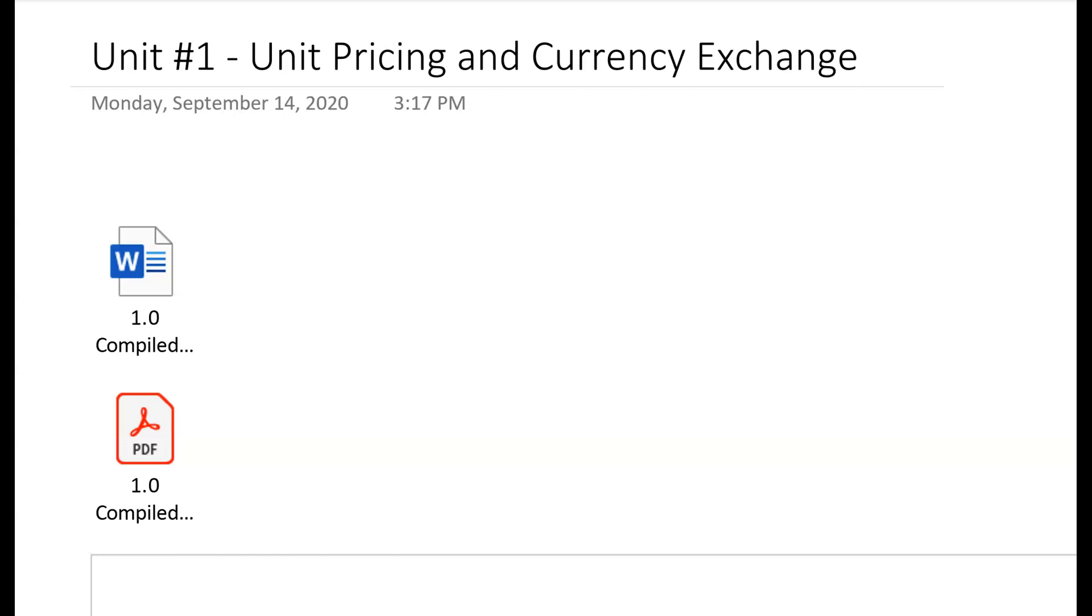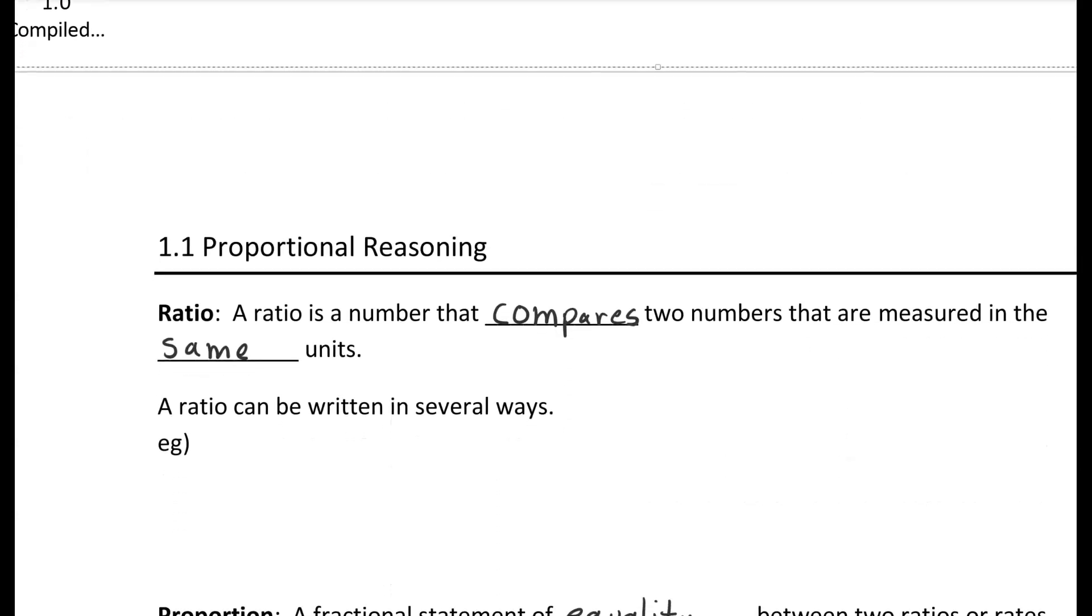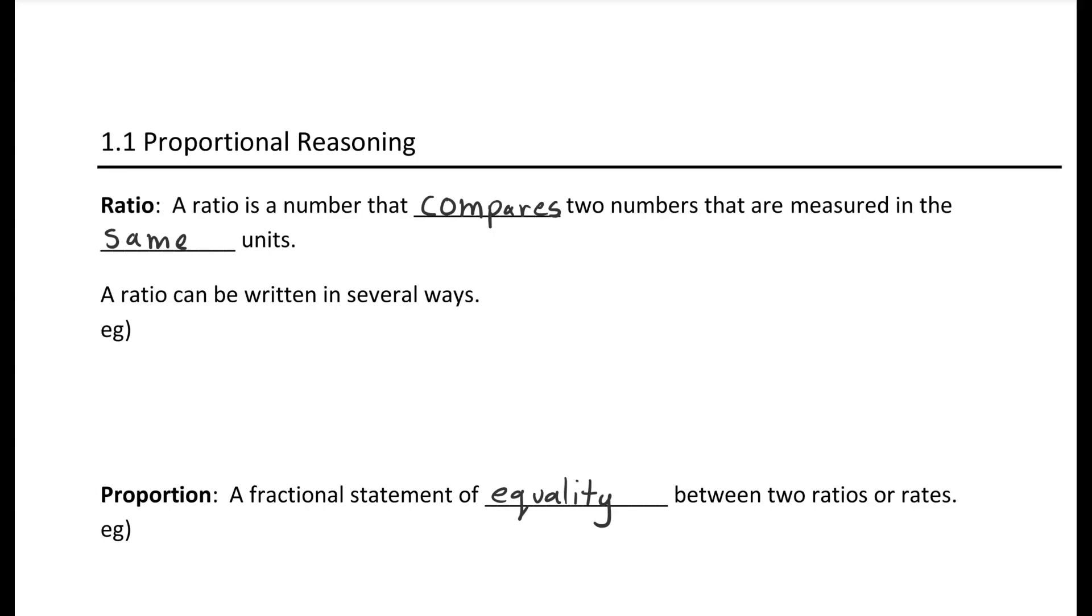Now all this can be found in our class notebook under OneNote, under the class documents. You can find the tab that says unit one, unit pricing and currency exchange. The topic we're going to be looking at today is proportional reasoning.